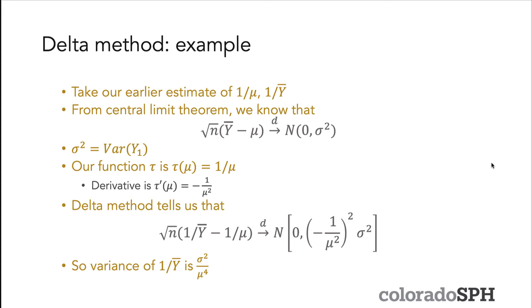Let's look at an example of the delta method. Let's take our earlier estimate of 1/μ, 1/Ȳ, where we had the Y's coming from a normal distribution with mean μ and variance σ². From central limit theorem we know that Ȳ is asymptotically normal, and we also have σ² is the variance of Y₁. The function that we're interested in is 1/μ, and the derivative of that function is given by −1/μ².